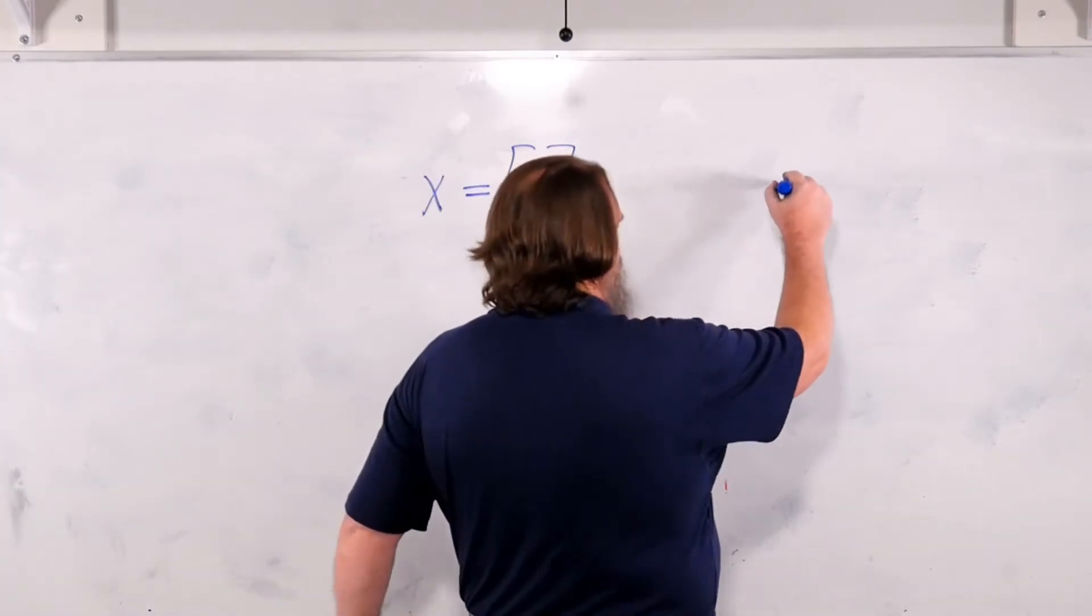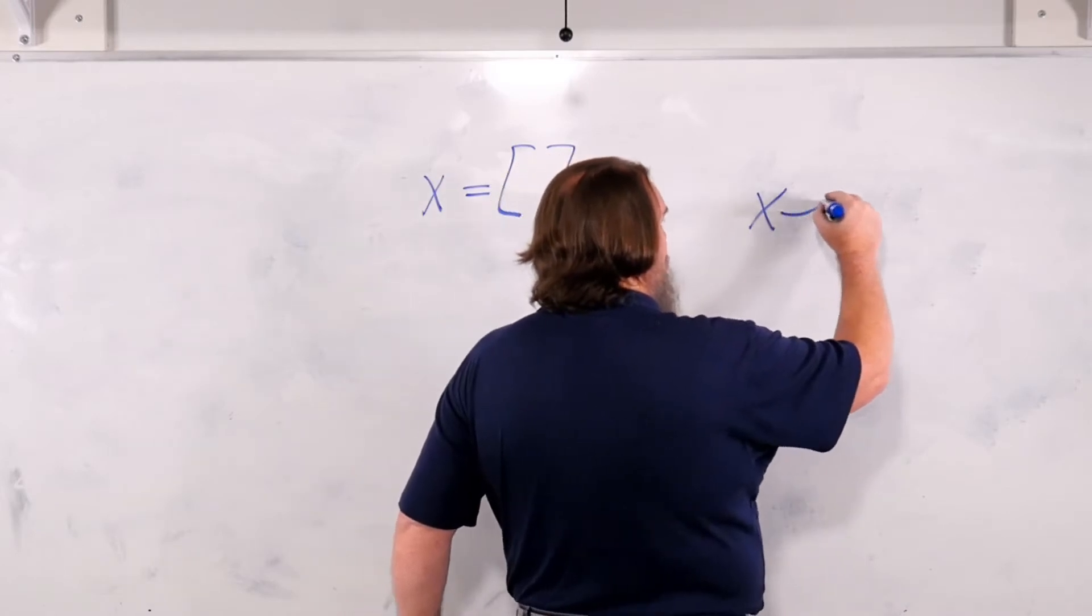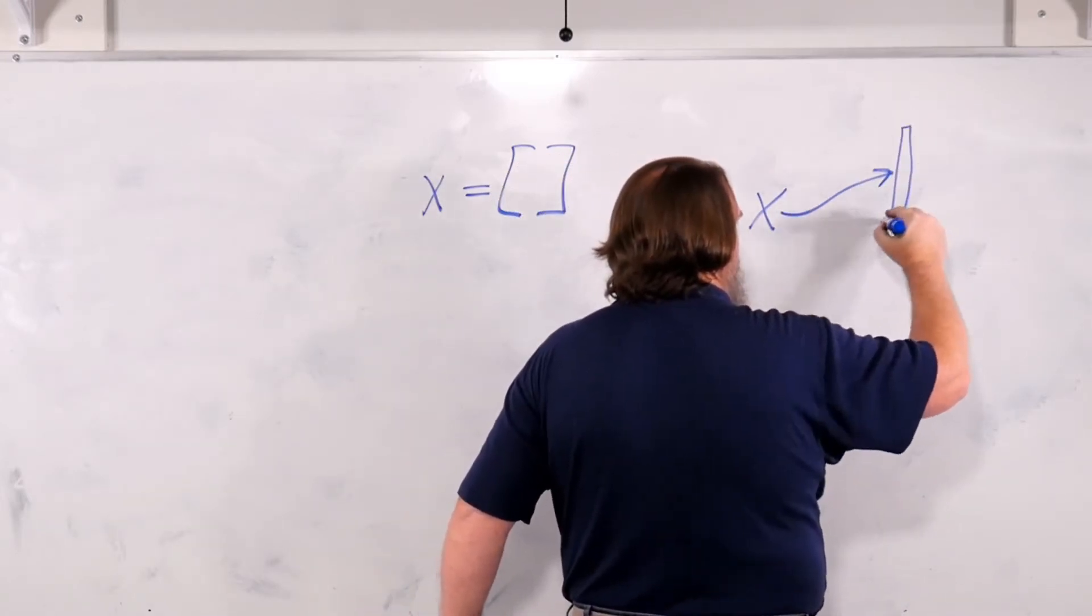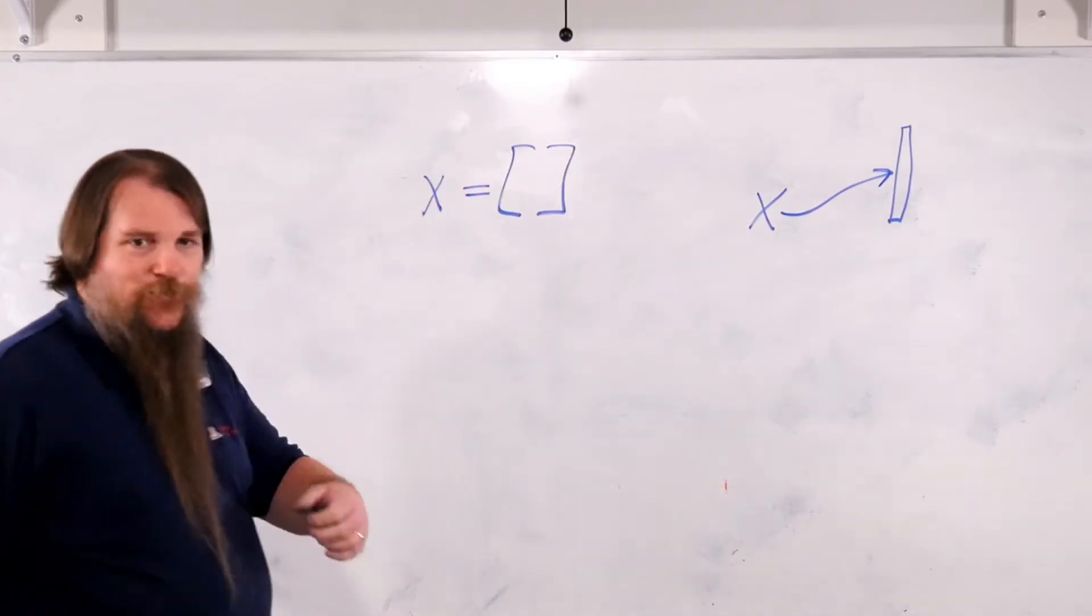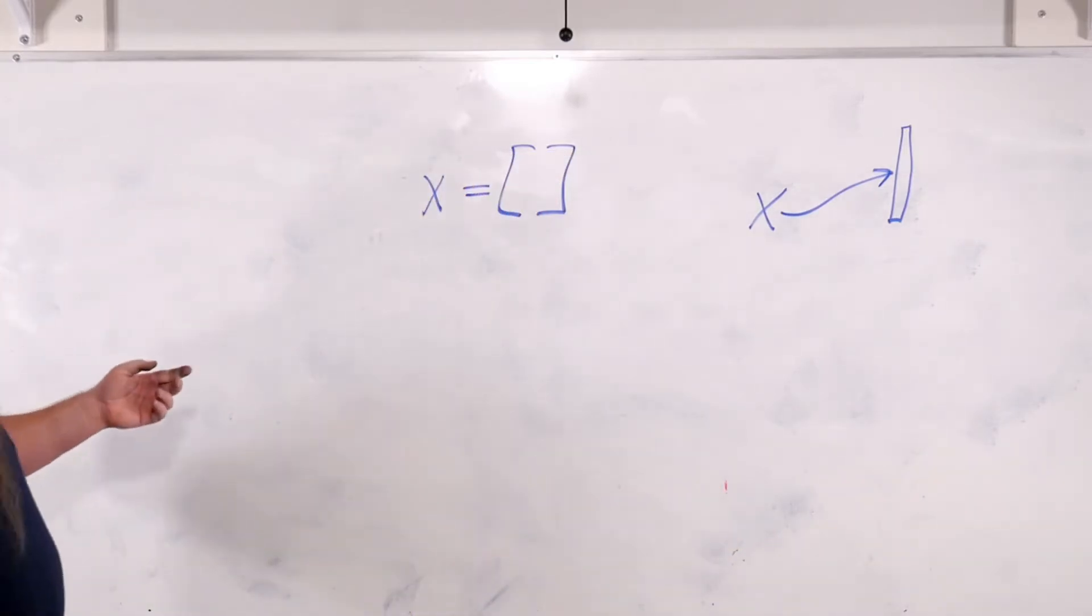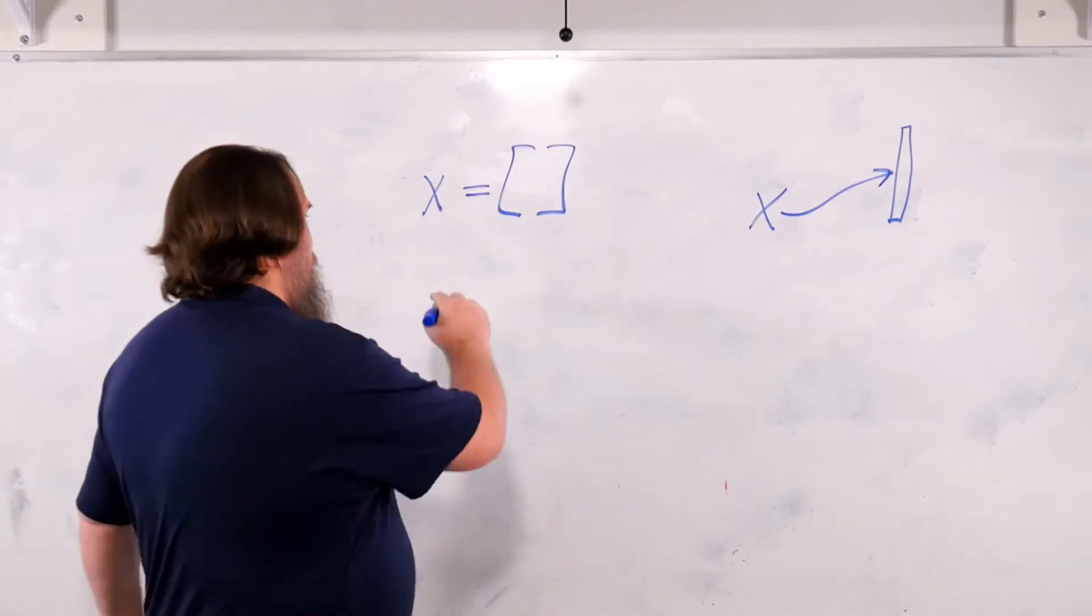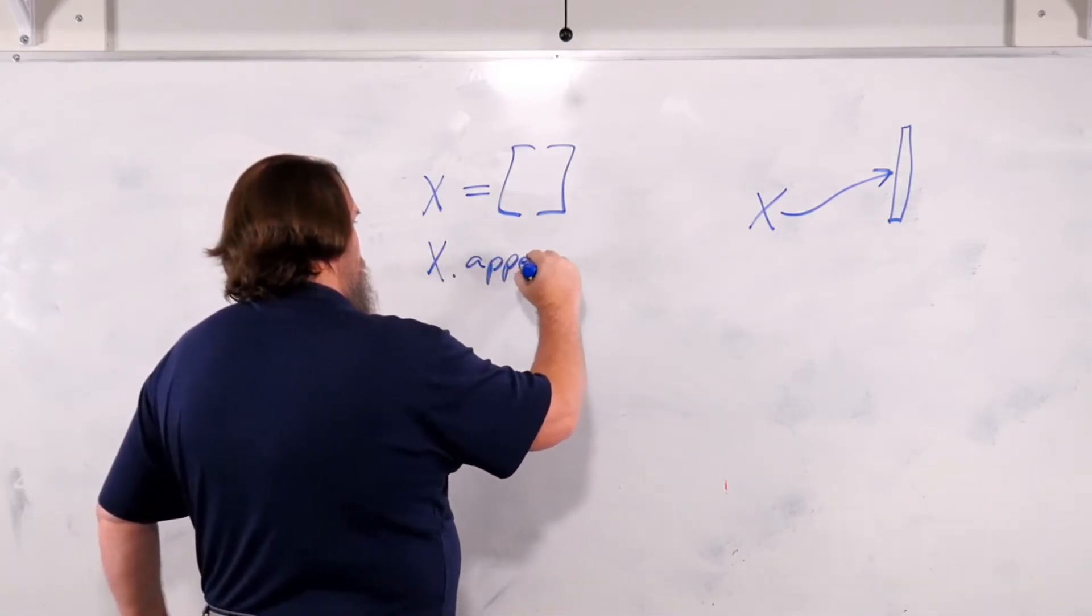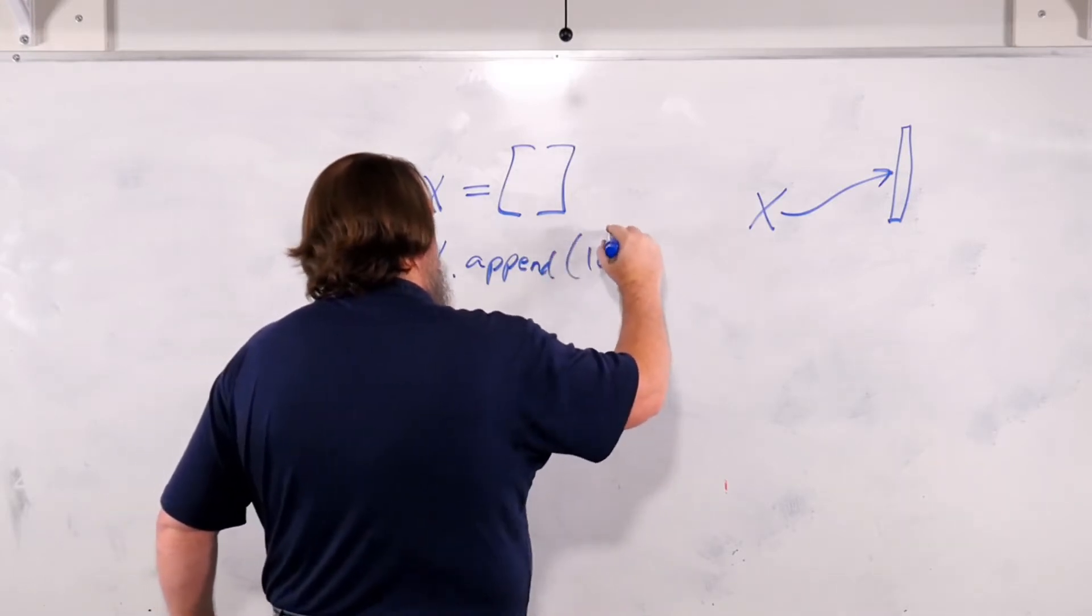So I'll draw it the way we're going to draw reference diagrams when we get there. This is a box here that has no elements in it so far. Now, if we want to add something to it, we can say x dot append 10.